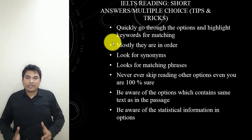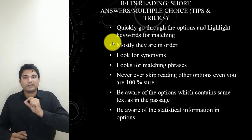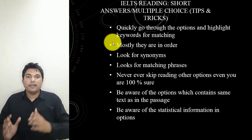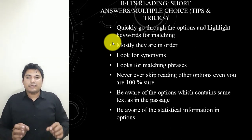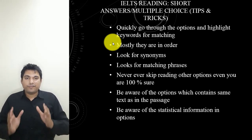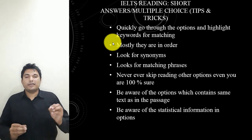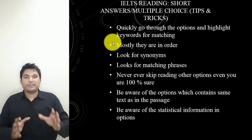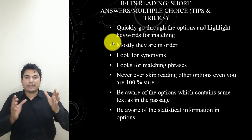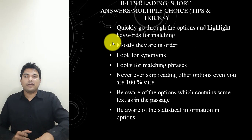Be aware of statistical information in the options. For example, if you see 10% in the options and 10% in the passage, you cannot simply tick that answer, because the 10% in the passage may refer to a different cause than the 10% in the option. If you find statistical information, still be very sure you are taking the correct option. Most students tend to match numbers without reading the complete sentence or understanding the full context.